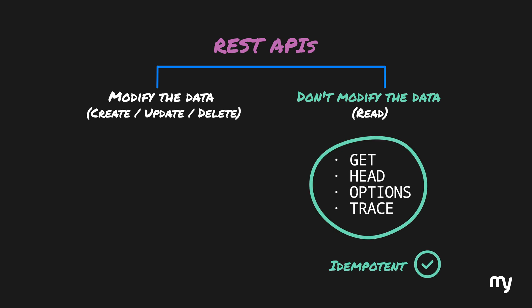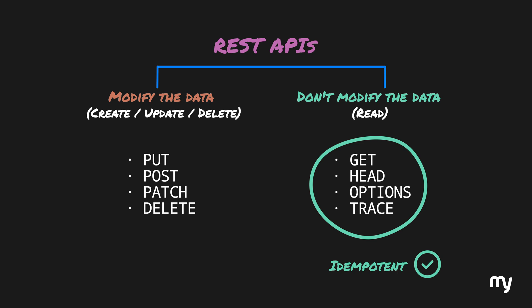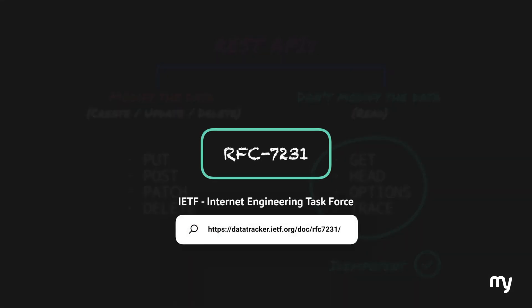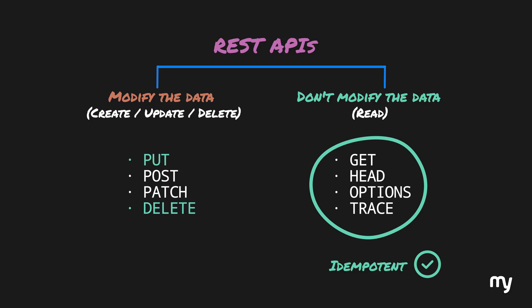Now let's talk about request methods which do modify data: PUT, POST, PATCH, and DELETE. According to RFC 7231 by the Internet Engineering Task Force, PUT and DELETE must be idempotent, whereas POST and PATCH can also do without being idempotent. It simply means these methods are not guaranteed to be idempotent — they might be or they might not be, but they are not guaranteed. These request methods are not going to be magically idempotent; we have to implement them correctly.